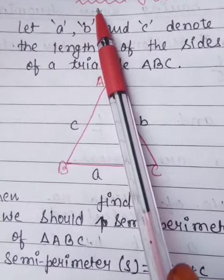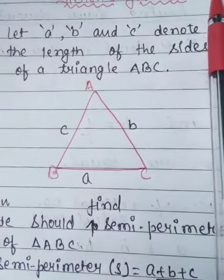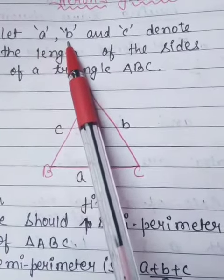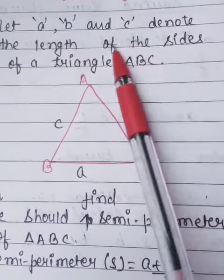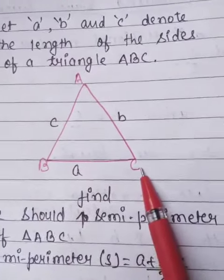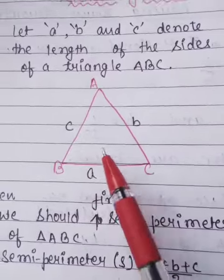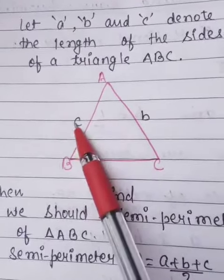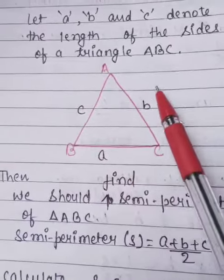Now come to the point that how we apply Heron's formula. See here, let A, B and C denote the length of the sides of a triangle ABC. A, B, C is a triangle in which A, B and C denote the sides of the triangle.